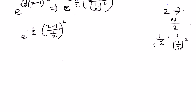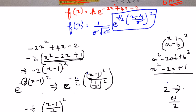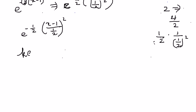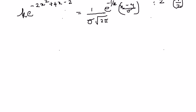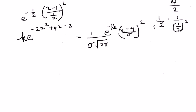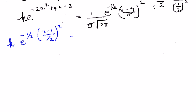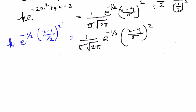Now when we equate this to the given formula: k·e^(−2x² + 4x − 2) = (1/(σ√(2π)))·e^(−½·((x−ν)/σ)²), we can write the left side as k·e^(−½·((x−1)/(½))²) which equals (1/(σ√(2π)))·e^(−½·((x−ν)/σ)²).